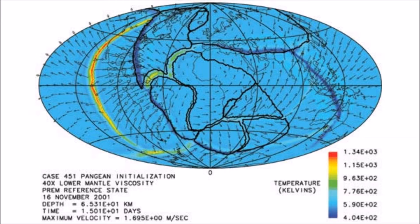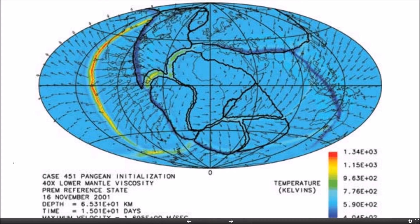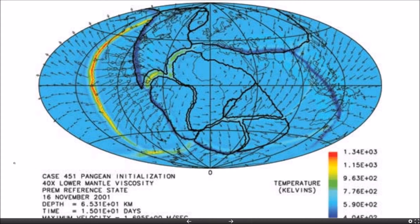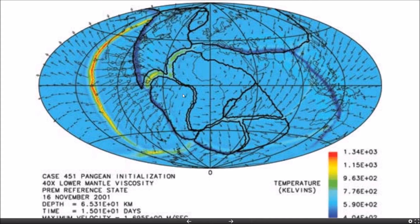And we can actually model this. This is Terra. It's a plate simulation. And you can see along that boundary there is where the initial break happens. And then it rips open the Mid-Atlantic Ridge.